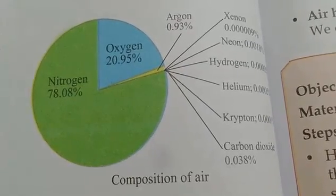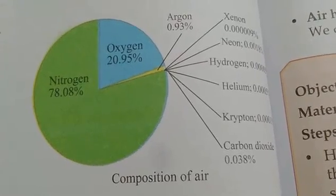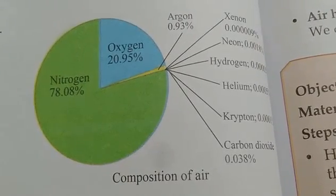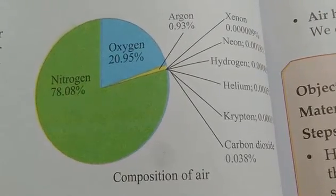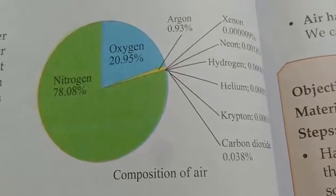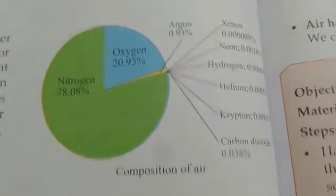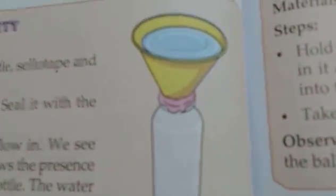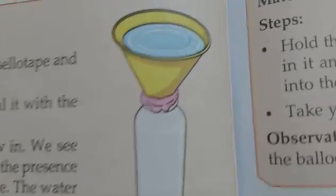Other gases include hydrogen, argon, etc. Next we learnt the properties of air. The properties of air are: air occupies space, air has weight, and air exerts pressure.